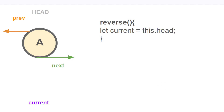First of all, you're going to start by creating the reverse function. You want to create a variable called current that points to the head, because we don't want to alter the actual node of the head. It will come in handy until the end — we're going to use that to actually do some tweaks.